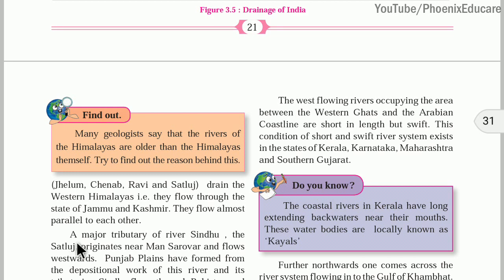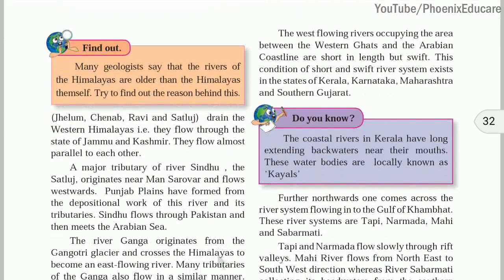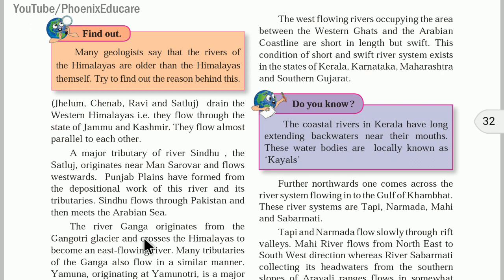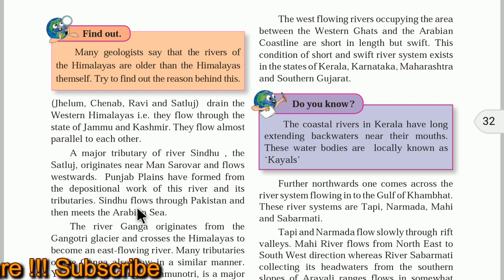After Jammu and Kashmir, these rivers enter Pakistan. They flow almost parallel to each other. The Satlaj originates from Mansarovar and flows westward. The Punjab Plains have formed from the deposition work of this river — each year sediments deposit and land is formed, creating the plains. Sindhu flows through Pakistan and meets the Arabian Sea near Karachi.